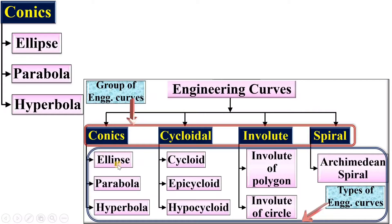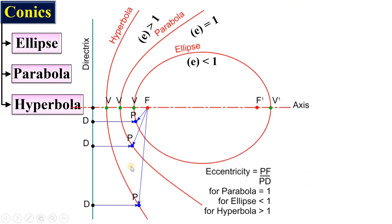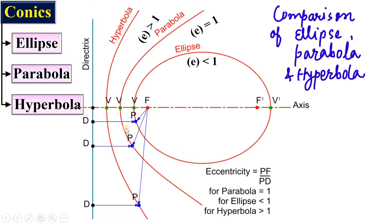We have discussed the different engineering curves in the conics group: ellipse, parabola, and hyperbola. Now here is the comparison of these three different engineering curves in one figure. Here you can see ellipse, parabola, and hyperbola together.